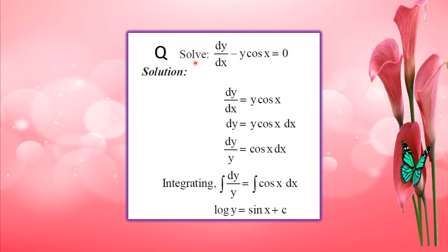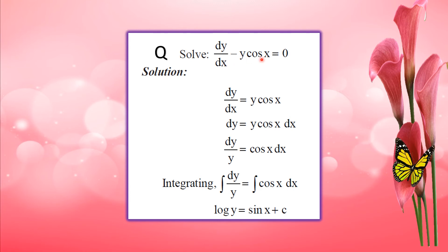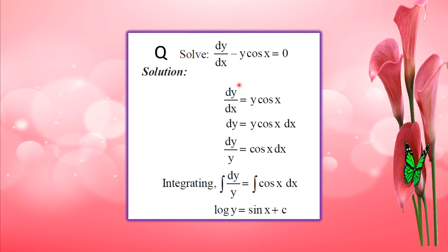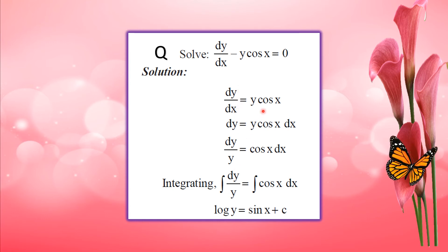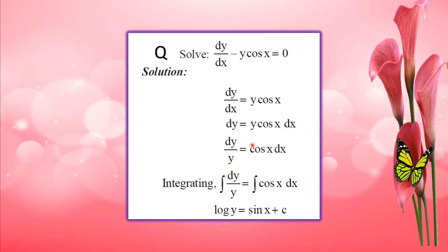Another example: solve dy by dx minus y cos x equals 0. Rearranging, dy by dx equals y cos x, so dy by y equals cos x dx. Integrating both sides: the left gives log y, and the right gives sin x plus c.